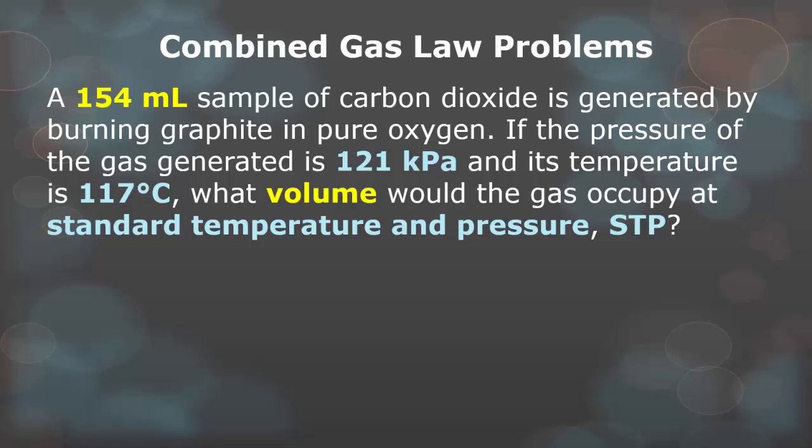If the pressure of the gas generated is 121 kPa and its temperature is 117 degrees Celsius, what volume would the gas occupy at standard temperature and pressure? You have to look at this question and understand that we're using three different variables — pressure, volume, and temperature — and we're looking for the initial and final values. Write down what you have. You're trying to find the volume at standard temperature and pressure using reference table A, while the original volume, pressure, and temperature are already given.